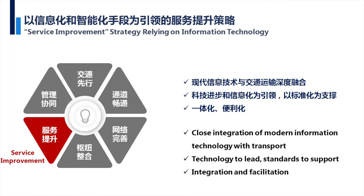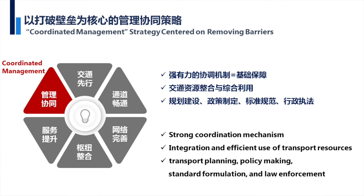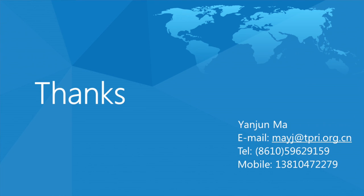The fifth point is service improvement, which has a lot to do with the application of information technology. For example, the commuting between Yanjiao — an area in Hebei province — and the center of Beijing: we have built some infrastructure between these two parts, but not many people use it because the service is not good enough. So infrastructure is one aspect and service is the other aspect. We need to build infrastructure and also improve service. Finally, the coordinated management for Chinese city clusters: we need to have a coordination management mechanism for the whole area and whole cluster so that each city's interest will be ensured. That's all for my presentation, thank you.